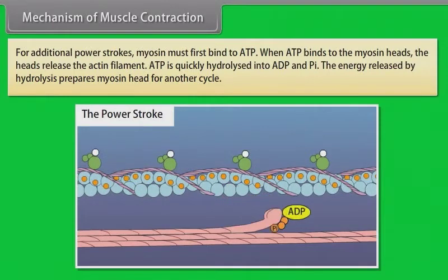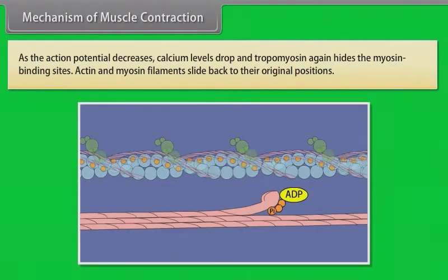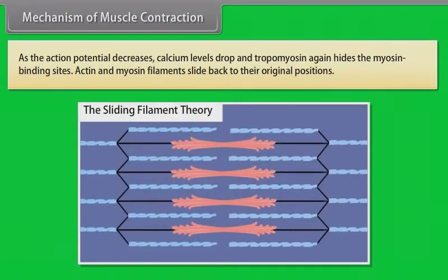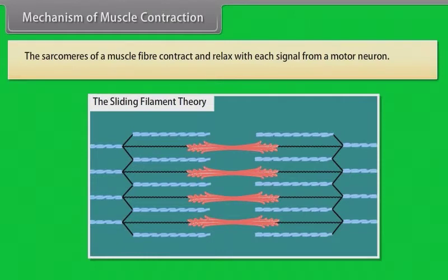For additional power strokes, myosin must first bind to ATP. When ATP binds to the myosin heads, the heads release the actin filament. ATP is quickly hydrolyzed into ADP and Pi, and the energy released prepares the myosin head for another cycle. As the action potential decreases, calcium levels drop, and tropomyosin again hides the myosin binding sites, causing actin and myosin filaments to slide back to their original positions. The sarcomeres of a muscle fiber contract and relax with each signal from a motor neuron.